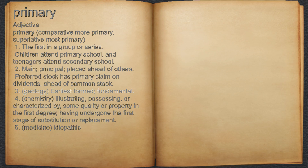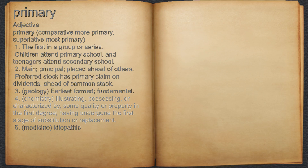3. Geology: earliest formed, fundamental. 4. Chemistry: illustrating, possessing, or characterized by some quality or property in the first degree, having undergone the first stage of substitution or replacement.